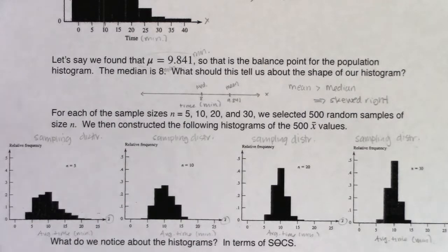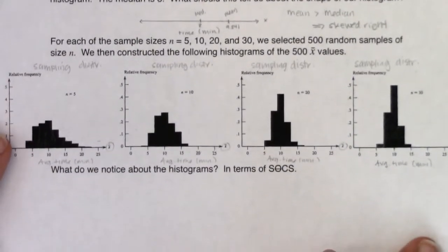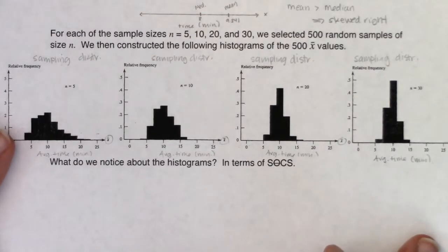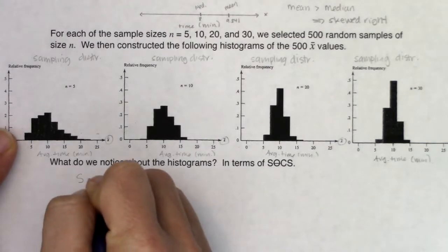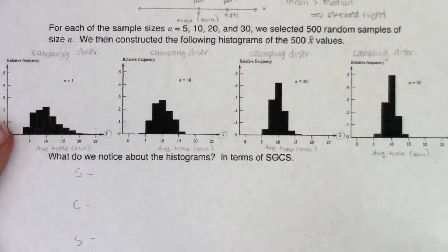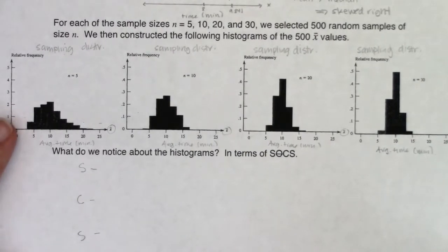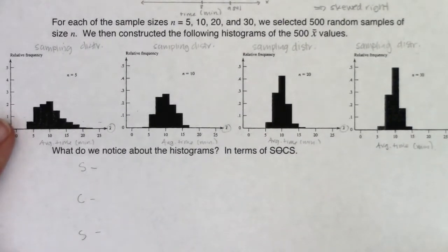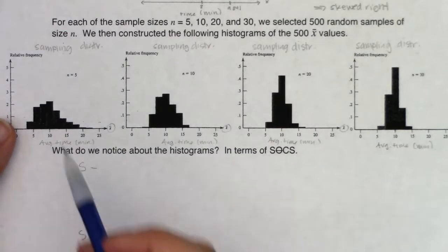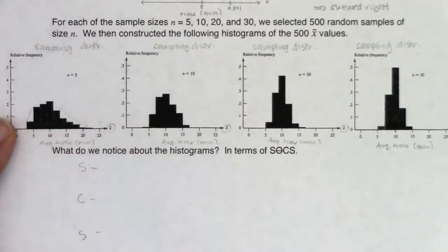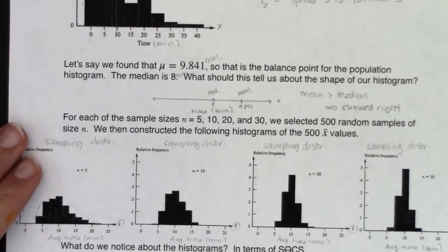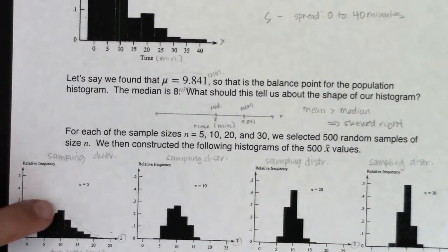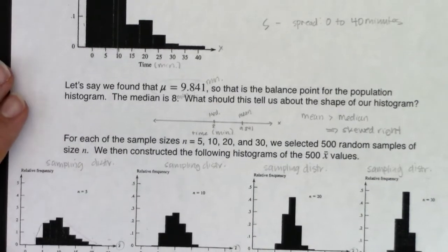Let's see if we can make some statements about SOCS — specifically the shape, center, and spread, not the outliers, as we don't have the raw data. Looking at the shape of the first sampling distribution, I would say this graph is still skewed right. But I want you to think about how skewed right this graph is compared to our population distribution — the population was severely skewed right.